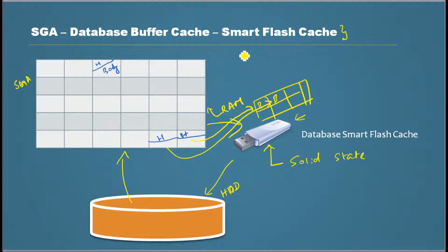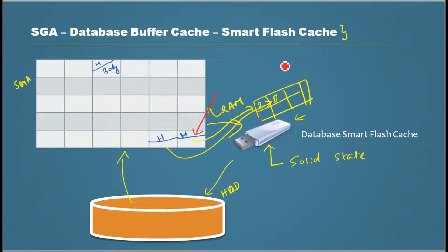For any process that would like to access the data, it would still read from the regular DB buffer cache, and using the header information, it would read the body from the solid state device. This is an overview of how Oracle has incorporated using smart flash cache devices as an extension to SGA, which would speed up things a little bit compared to reading from a hard drive. Thank you for watching.